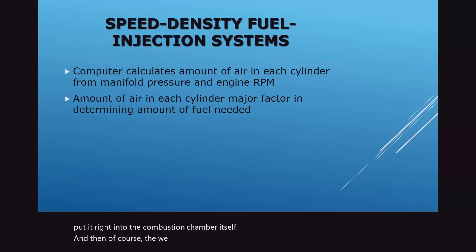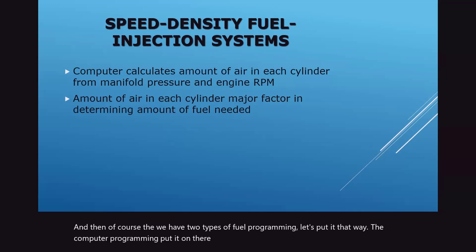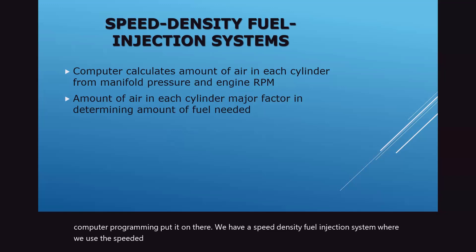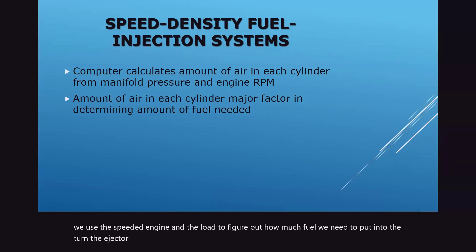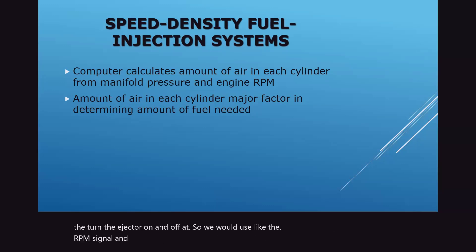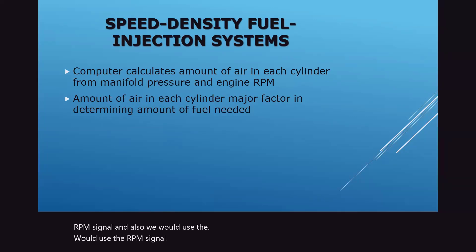We have two types of fuel programming. The speed density fuel injection system uses the speed of the engine and the load to figure out how much fuel to inject — we use the RPM signal and also a MAP sensor to see what kind of load value we have inside the engine. Early on, systems were very dependent on speed density.